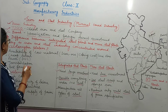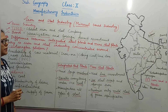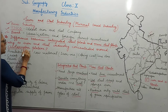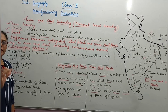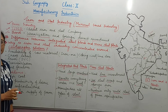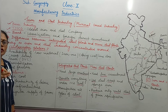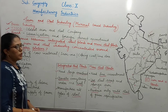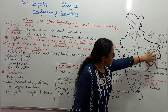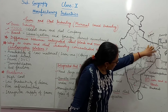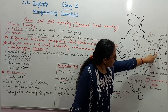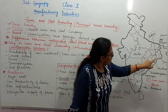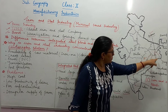The next topic is: why is the iron and steel industry concentrated around the Chota Nagpur Plateau? Most iron and steel industries are located in this region. The plants include Durgapur, Burnpur, Bokaro, Jamshedpur, Rourkela, and Bhilai.